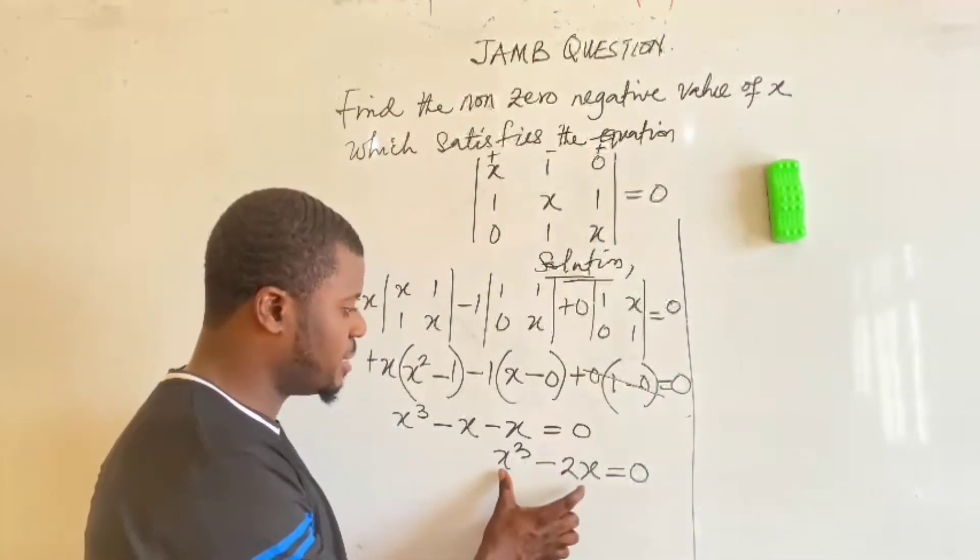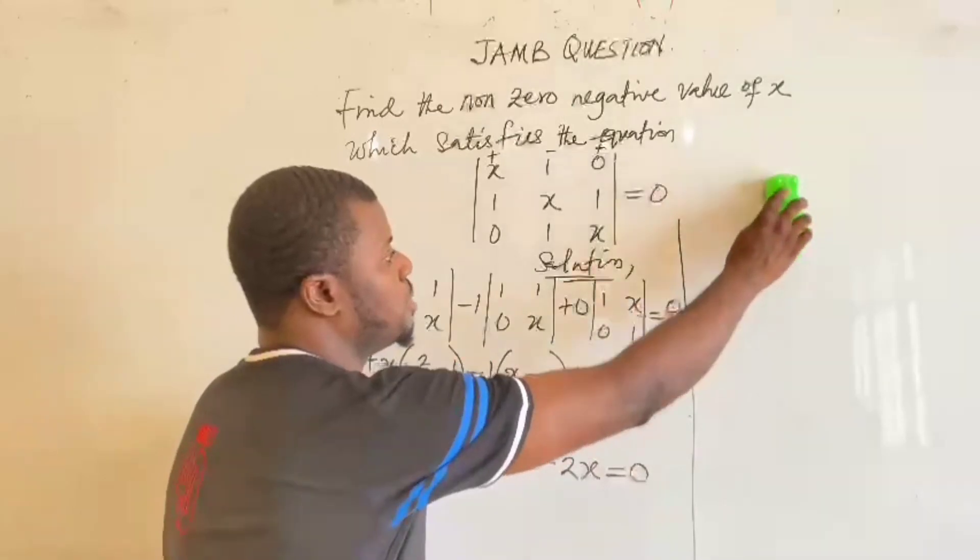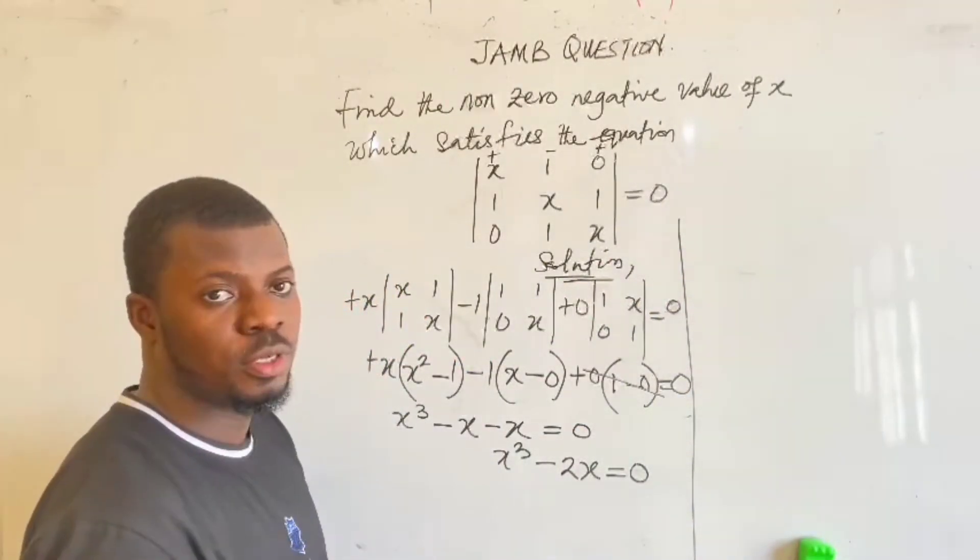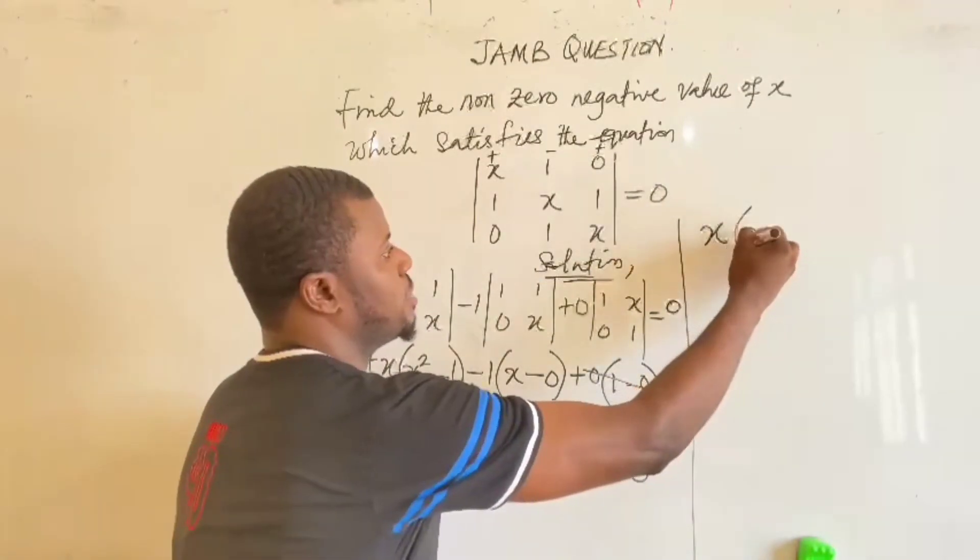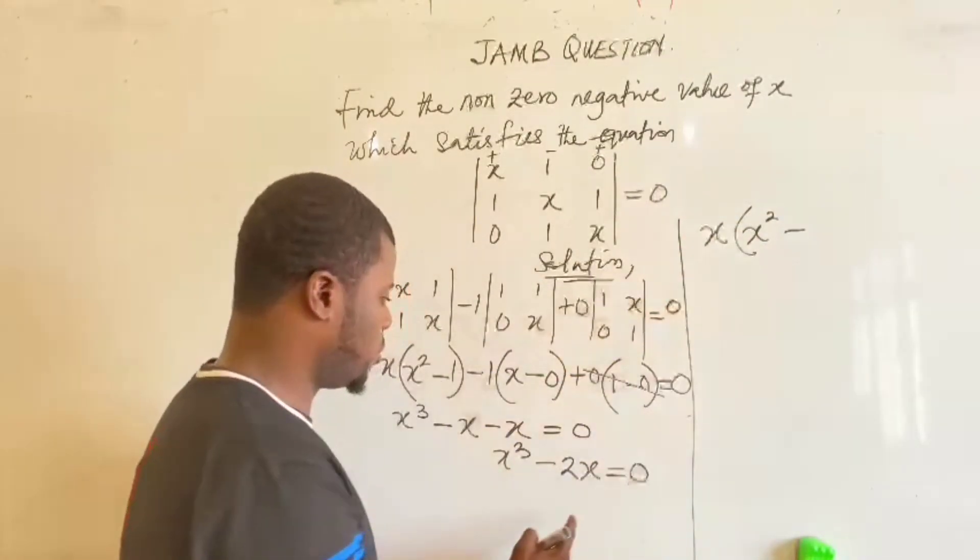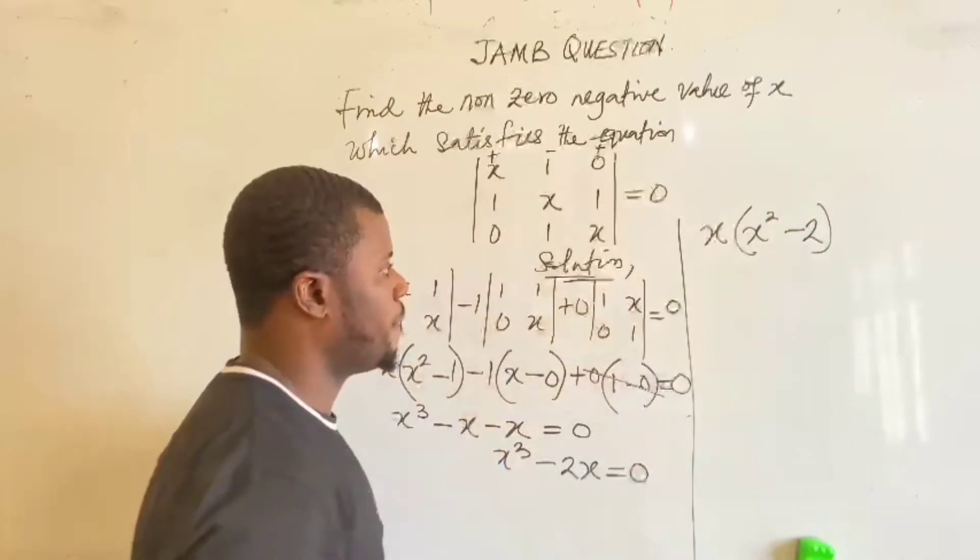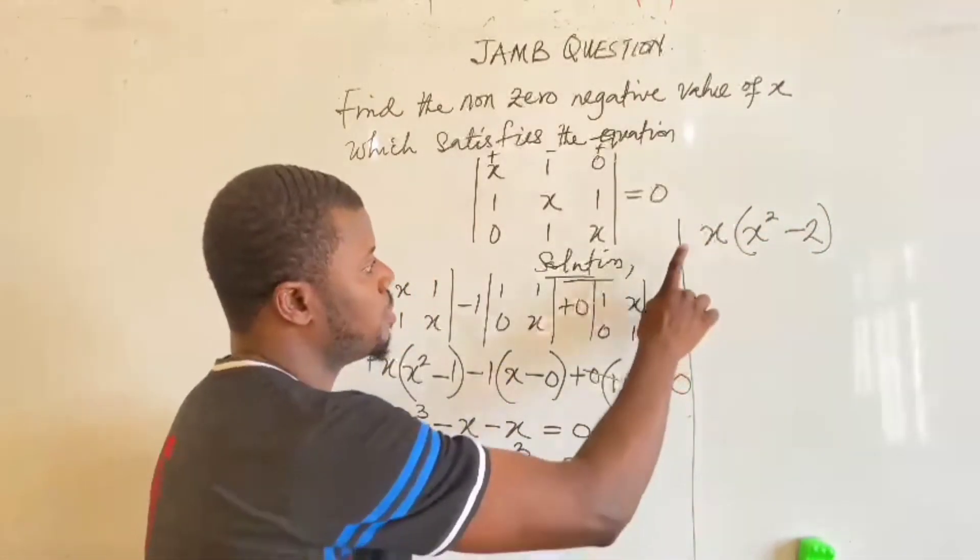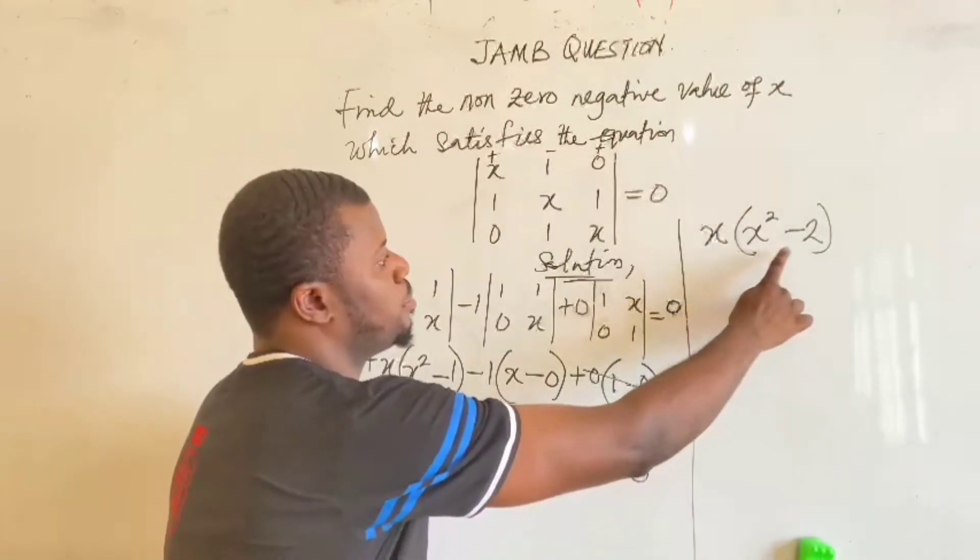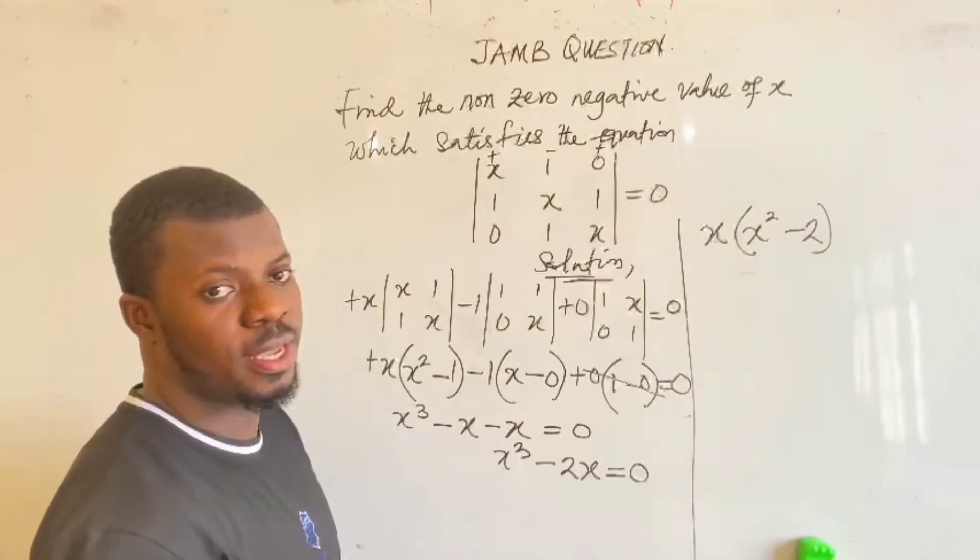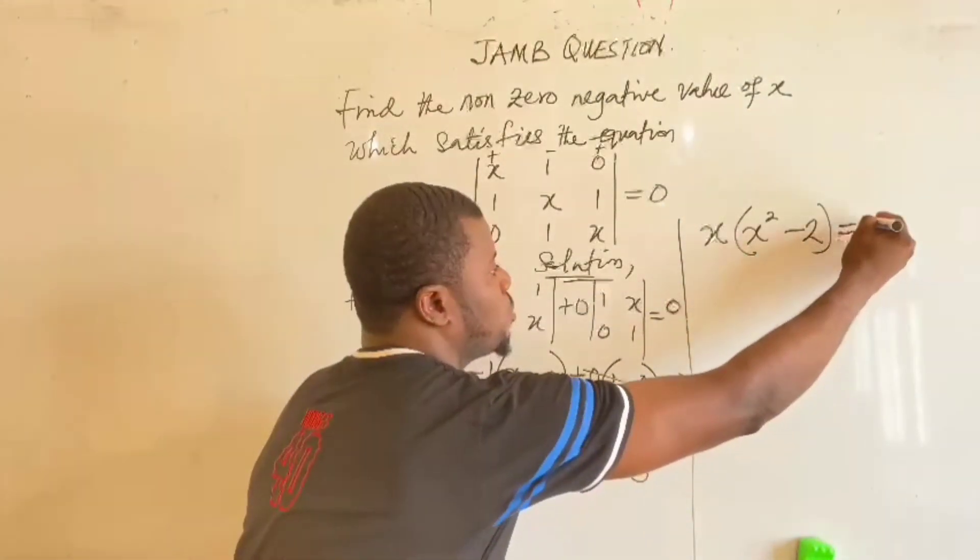So at this point, you know, we can factor out x. Or the next thing is x squared minus 2. Because if x multiplies x squared to give us x cubed, and x multiplies minus 2 to give us minus 2x. The whole of this is equal to 0. So it is either x equal to 0 or x squared minus 2 equal to 0.